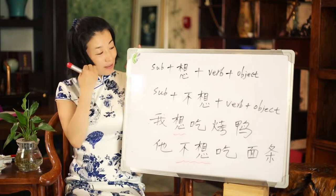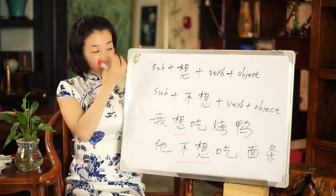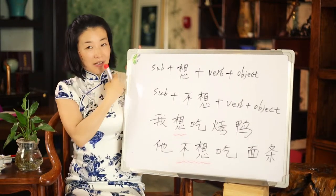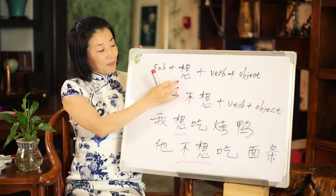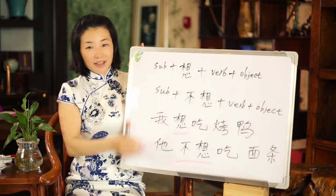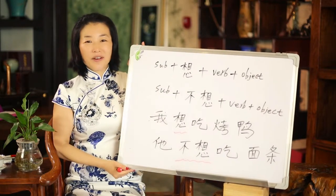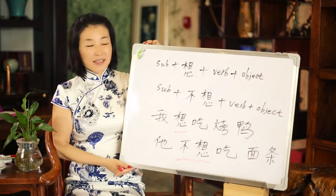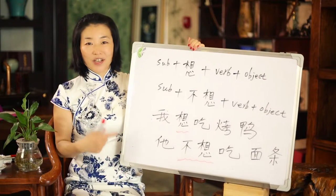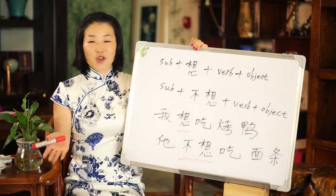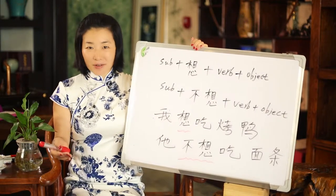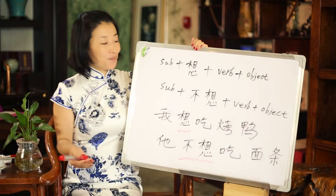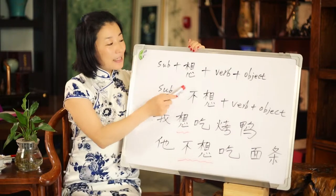So the negative form is 不想. Subject — why is there a subject? It's the people who are doing things: 我, 你, 他, John, Sarah, James, whoever — the person, basically.